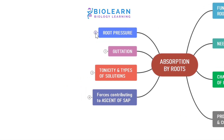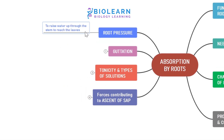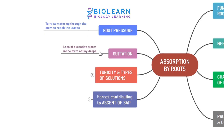The root pressure helps to raise water up through the stem to reach the leaves. Guttation is the process by which excess water is lost from the plant in the form of tiny drops.